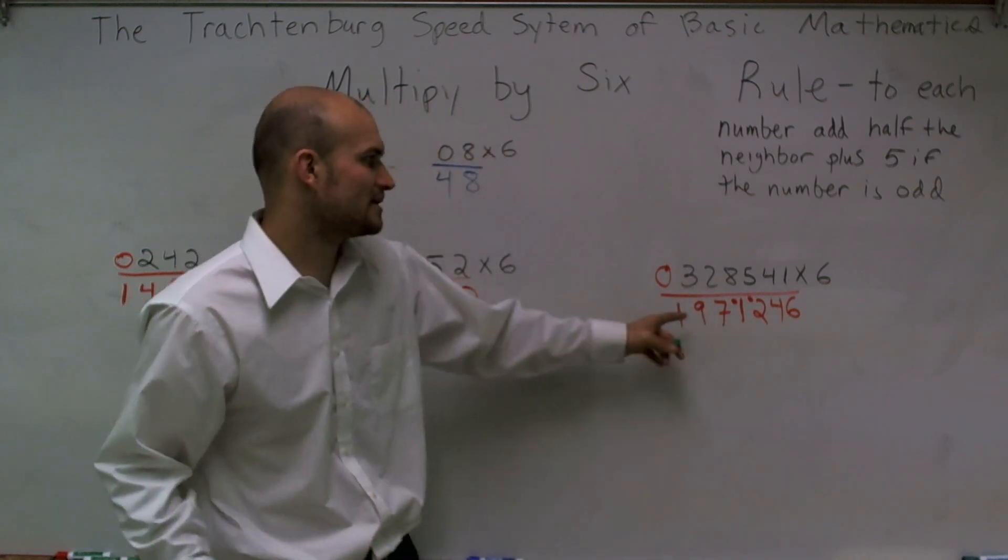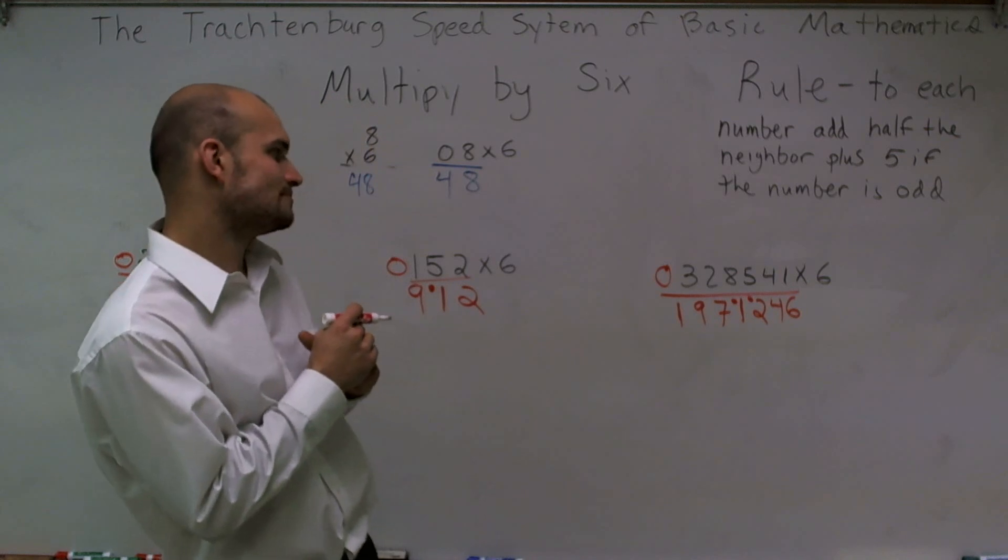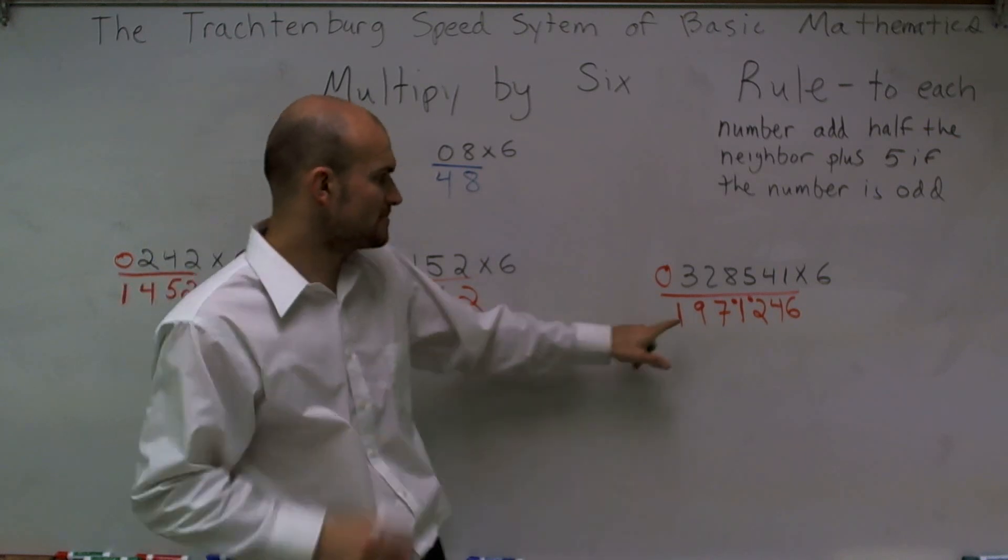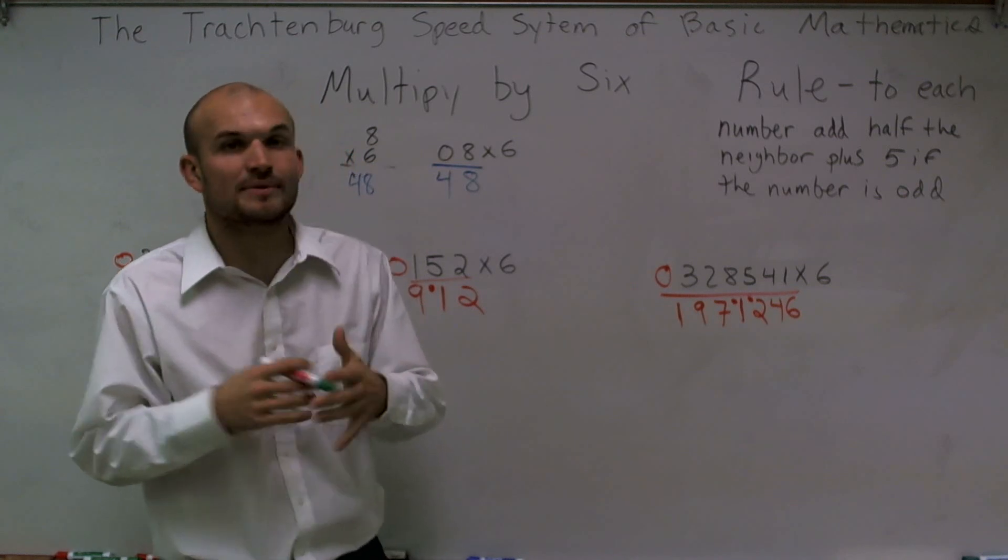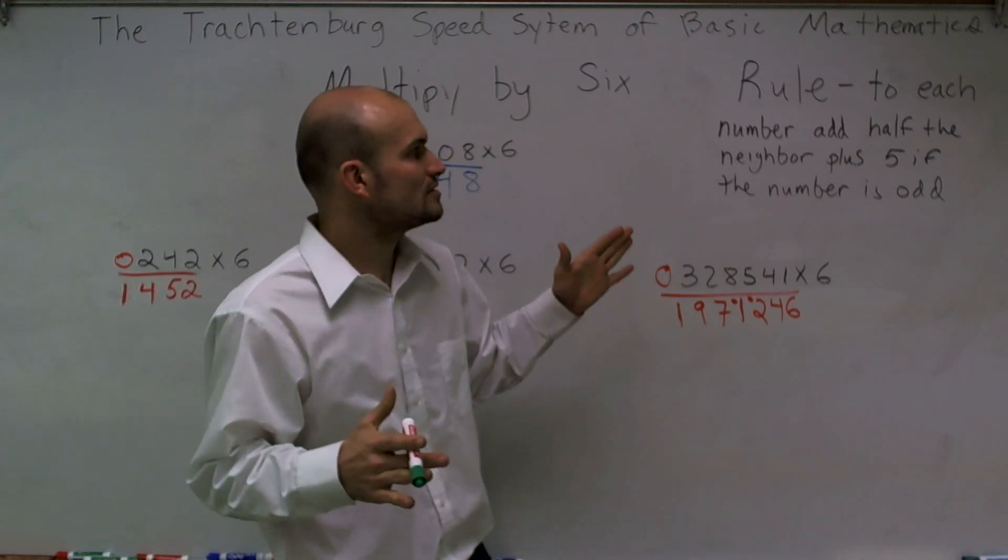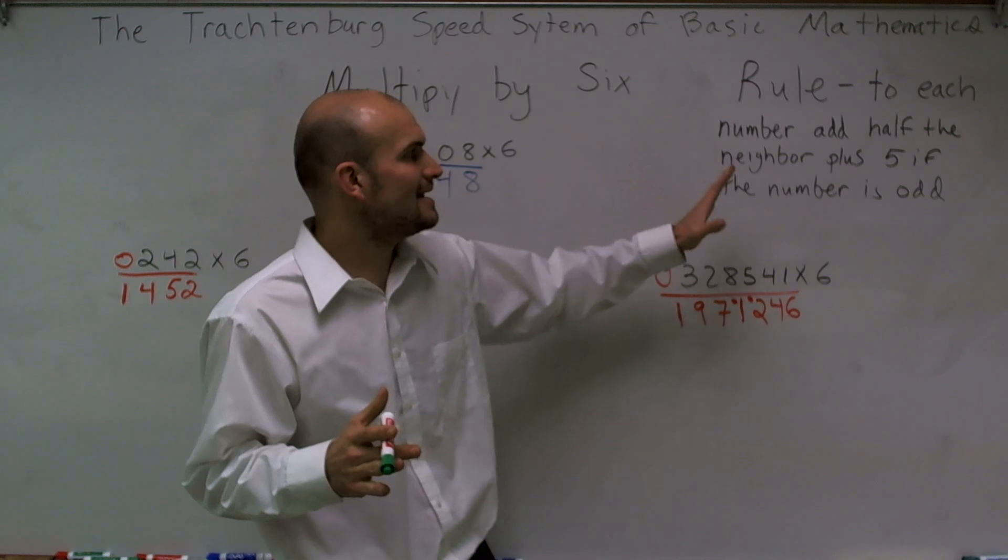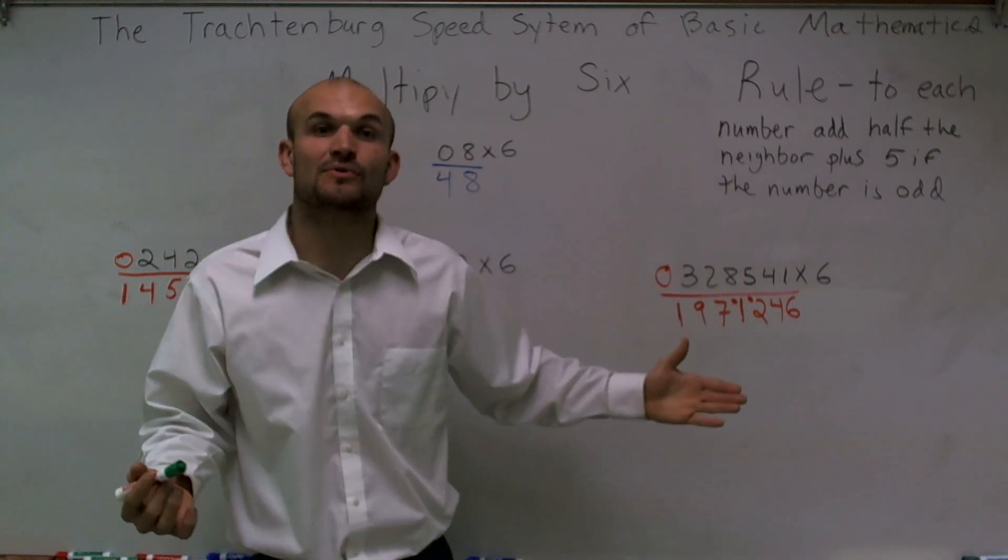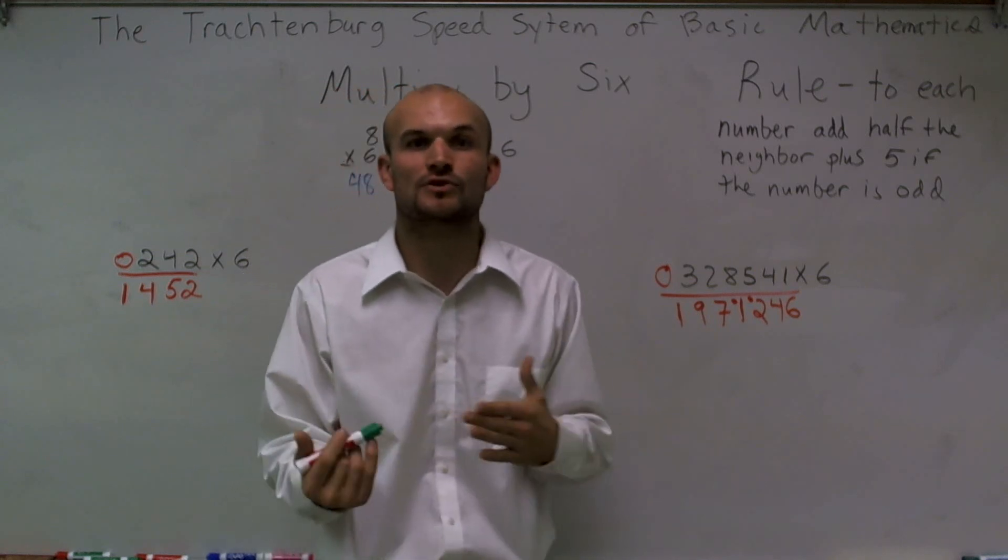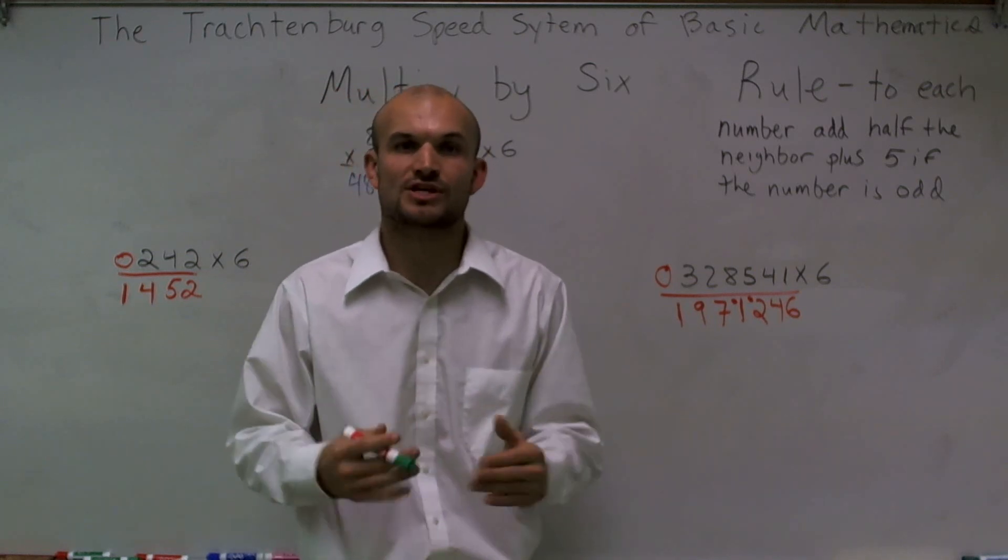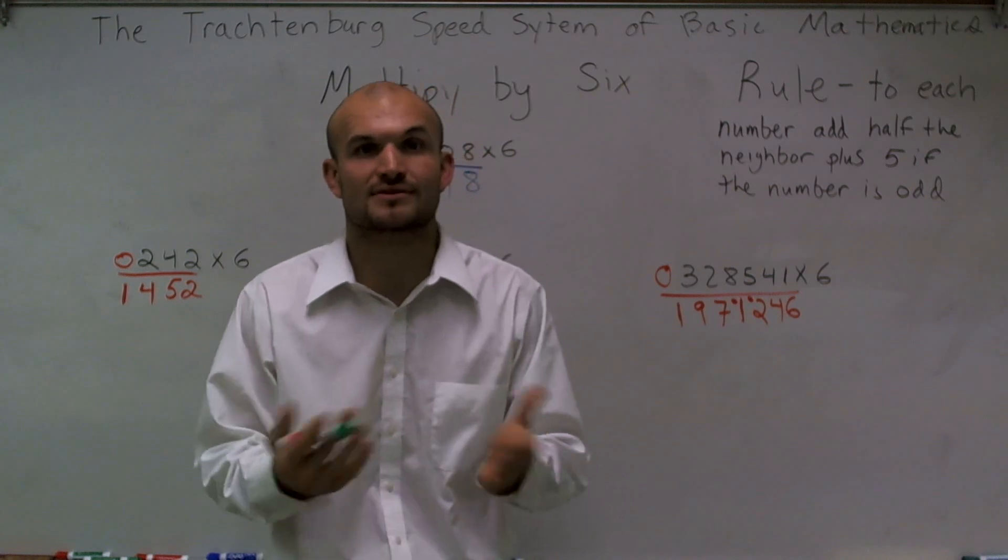So therefore, my final answer for here is going to be one million, nine hundred and seven thousand, two hundred and forty-six. So, ladies and gentlemen, the rule is very simple. Whatever the number is, add half of the neighbor, and then add five if the number was odd. So you just need to follow those systems, and you also need to remember the other rules that we talked about in the Trachtenberg system, which I'll continue to go with in this series of videos. Thanks for watching.